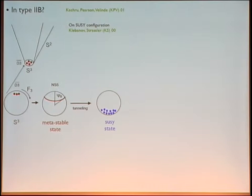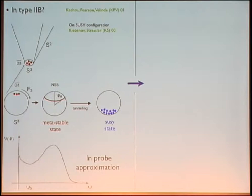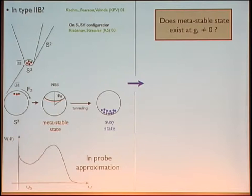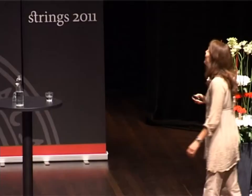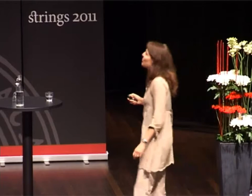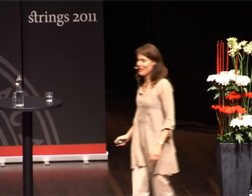They computed the potential in terms of the angle and found a local minimum (the metastable state) and a global minimum (the supersymmetric state). But again, this computation was done in the probe approximation. So the question is: does this metastable state exist for g-string non-zero? This is what our work tries to answer. If you just wanted a yes-no answer, I'm afraid I won't give it to you, because the answer is very subtle, and you have to bear with me for the 35 minutes left.